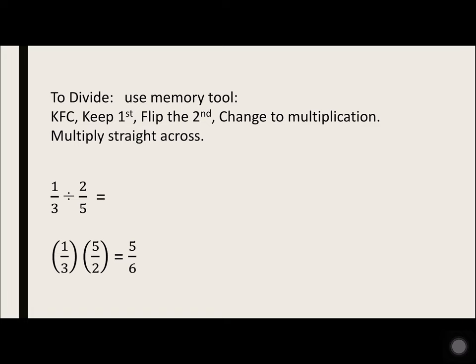1 over 3 divided by 2 over 5. We're dividing, so we're going to keep the first fraction, flip the second one. So 2 over 5 flips to 5 over 2, and then multiply straight across: 1 times 5 is 5, 3 times 2 is 6.